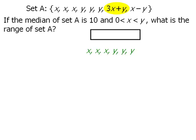Now what about 3x plus y? Where does this go? If x and y are both positive, then 3x plus y must be greater than y, since we're taking y and adding 3x more to it. As such, we can place 3x plus y to the right of y.